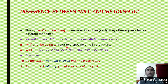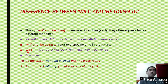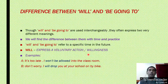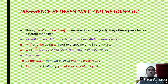Will and 'be going to' both refer to a specific time in the future. These two usages refer to expressing a specific time in the future. Will expresses a voluntary action or willingness. Suppose a person wanted to work voluntarily without compulsion, with his own willingness — we use Will in such situations.